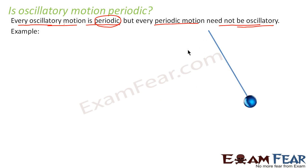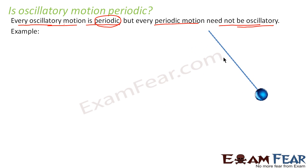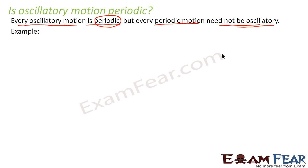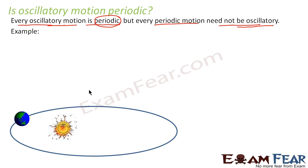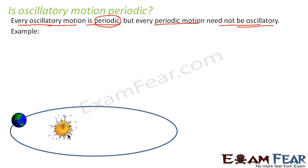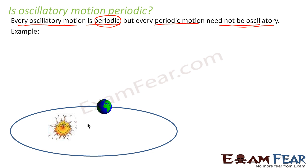For example, the pendulum is an oscillatory motion, and since it is oscillatory it is also periodic — it is a periodic to and fro motion. But consider the motion of the Earth around the sun: that motion is periodic — the Earth travels around the sun in a circular orbit and repeats its path after regular intervals — but it is not oscillatory. So it is not always necessary that any periodic motion is oscillatory, but vice versa is always true: an oscillatory motion must be periodic.